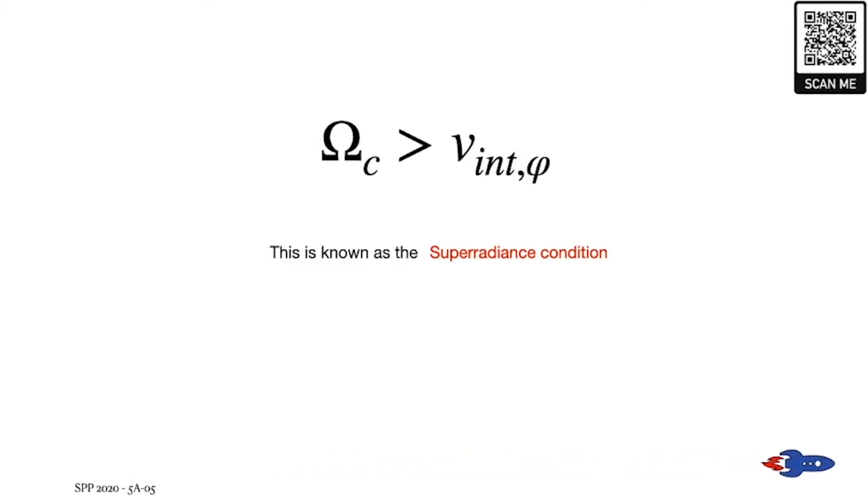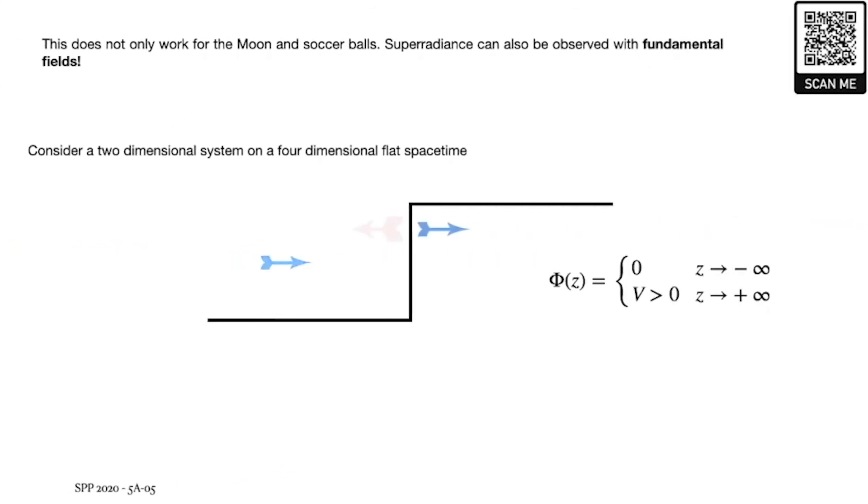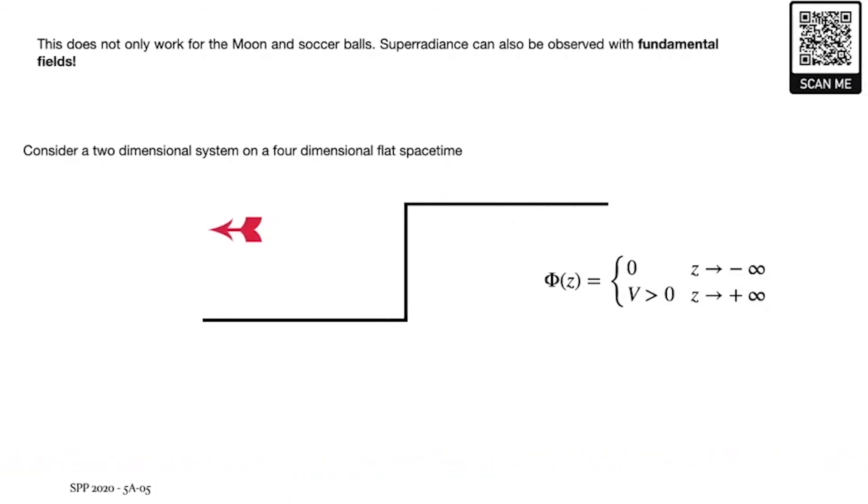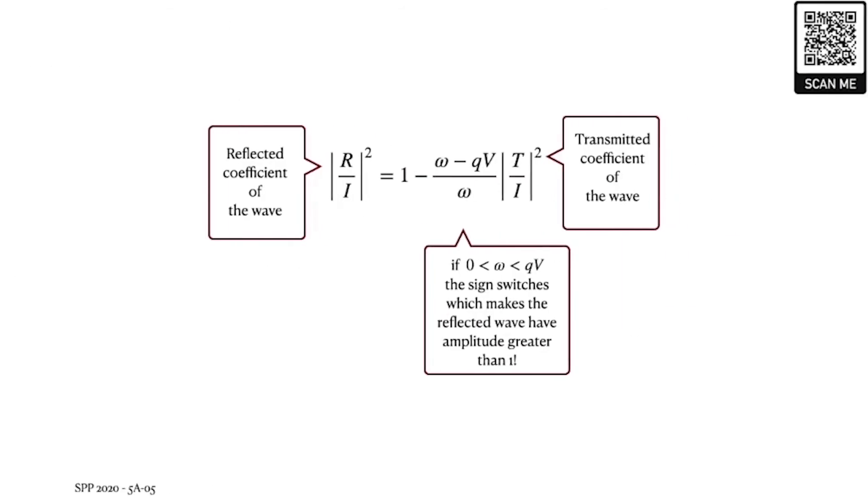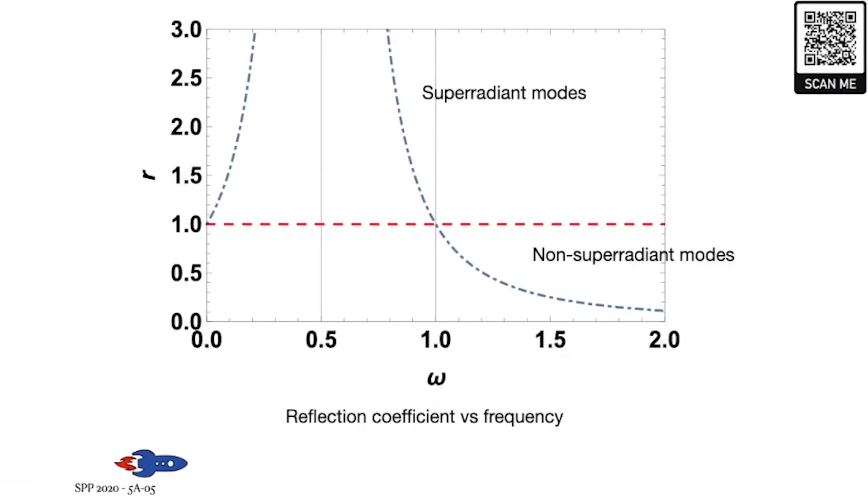Now imagine a scalar field coming in contact with a strong electromagnetic step potential. As the field hits the potential at a certain frequency, we get a reflected wave whose amplitude is greater than the initial amplitude. What really happens here is that when we solve the equations of motion for this bosonic field, we get this relation. Here again we see the superradiance condition. If satisfied, it switches the sign of the term making it a growth instead of a loss. We can clearly see this with this plot, the distinction between the superradiance modes and the non-superradiance modes.